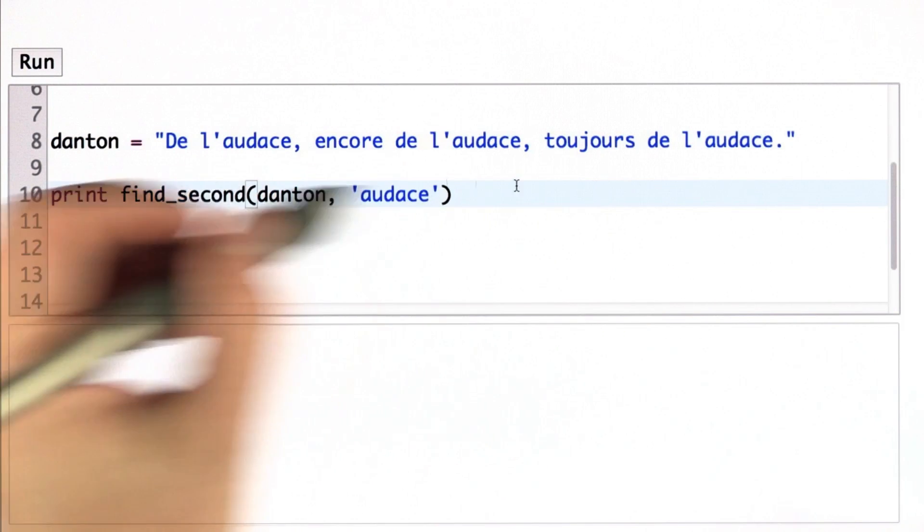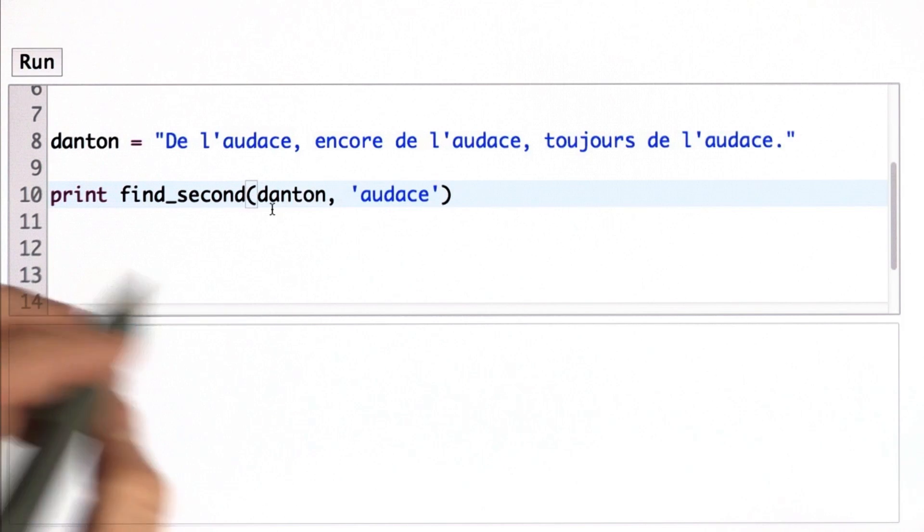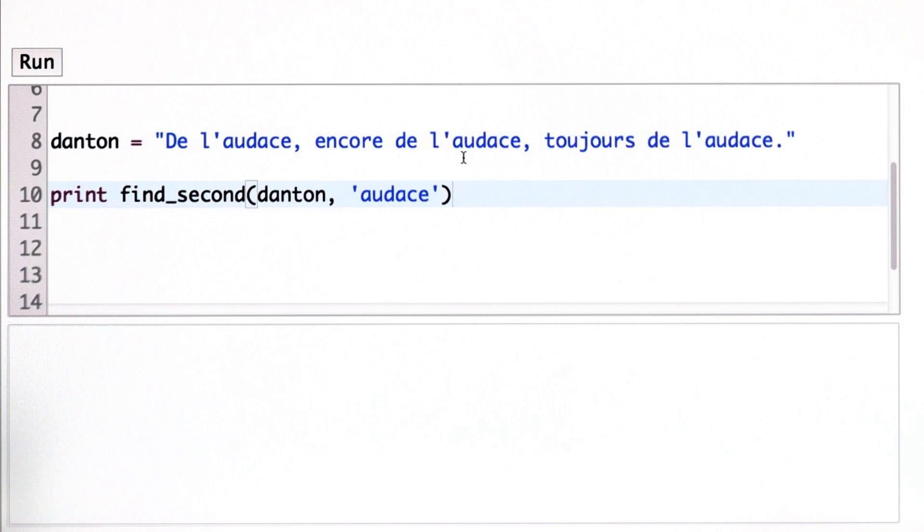here's the quote we had in unit one from George Danton. And if we evaluate findSecond passing in Danton as the first input, and Audace as the second, what we should get is the position of the second occurrence of Audace in the input string Danton. And when we run this, we see that we get 25, which is that position.